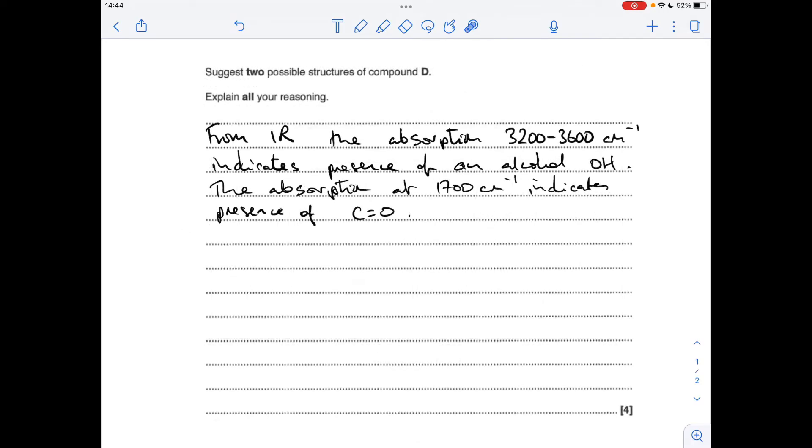Now it's fine to annotate your spectra, and I would strongly recommend that you do that, but I'm just writing it up as well. From the infrared, the absorption between those wave numbers indicates the presence of an alcohol OH, and the absorption at 1700 centimeters to minus one indicates the presence of a C double bond O.